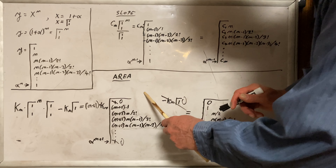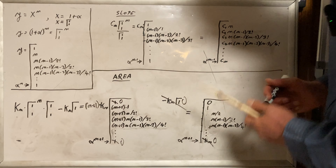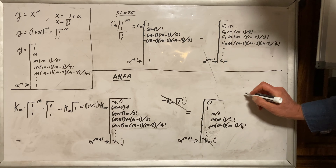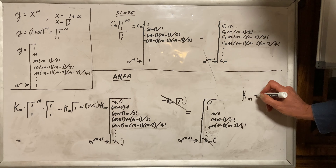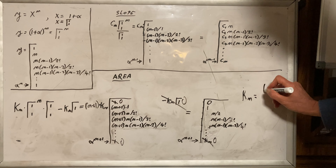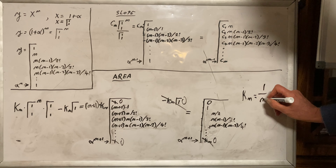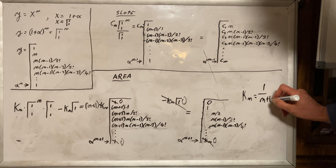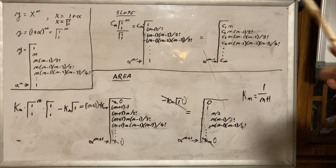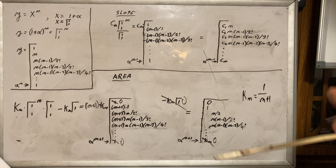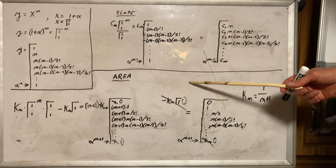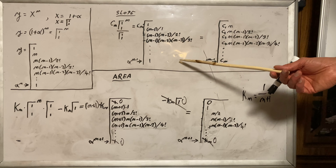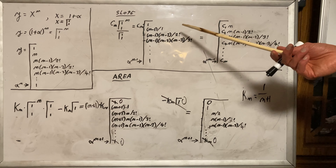These cancel out completely and you get K sub N equals 1 over N plus 1. Pretty good! A similar logic now applies to the slope.